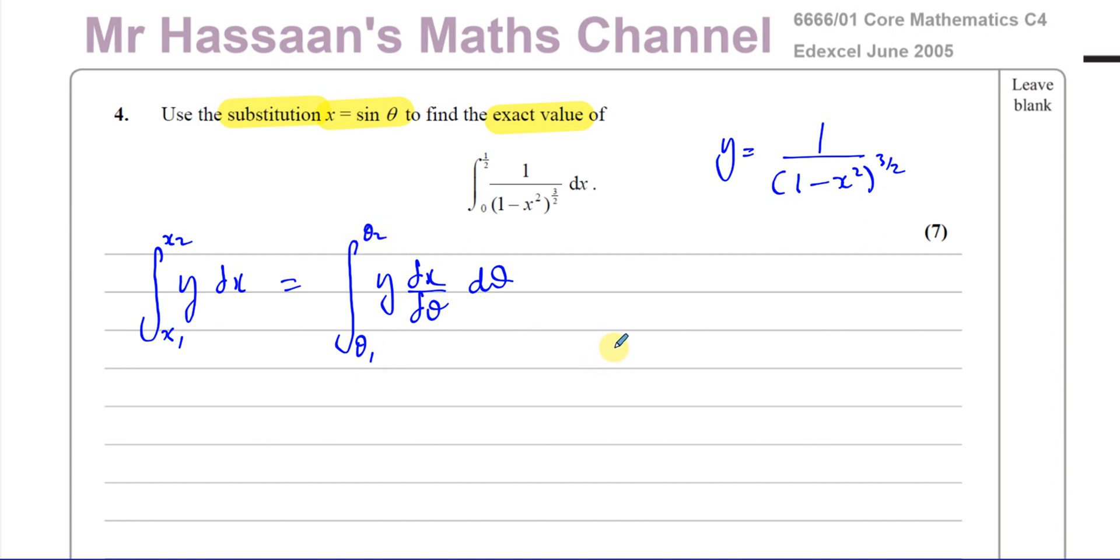Let's get the limits sorted out. We know if x equals sine theta, that means theta equals inverse sine of x. So when x equals a half, then we can say theta equals inverse sine of a half, which is equal to pi over 6. When x equals 0, we've got theta equals inverse sine of 0, which is 0. You should always use radians whenever we're dealing with differentiation or integration.